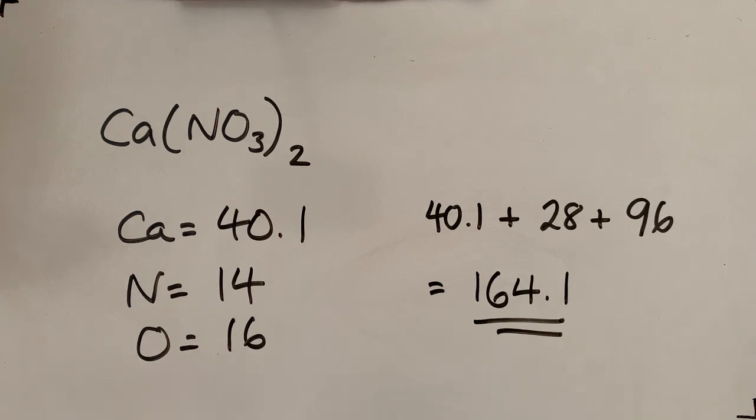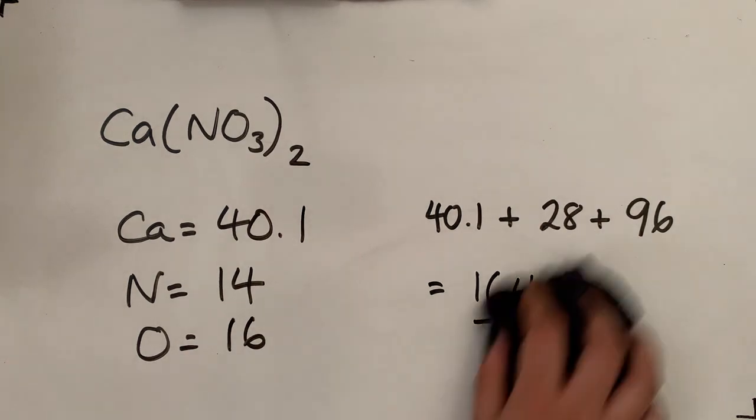Moving on to exercise 6, you are calculating the number of moles of material in a given mass of that material. It says use the molar masses of what you calculated in exercise 5 to calculate the number of moles to three significant figures. Now in order to do this you need to know an equation which you should have done back at high school. If you haven't, I'll cover it now.